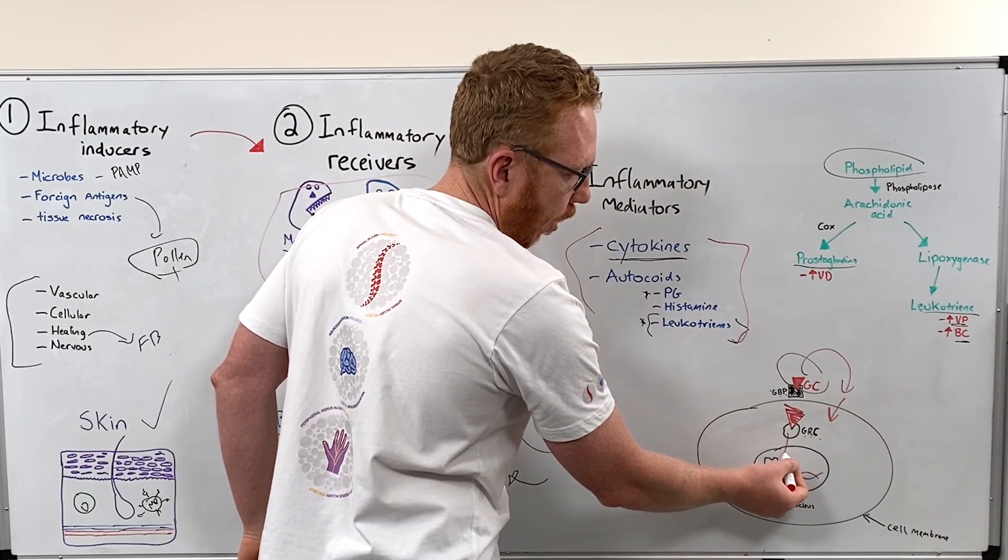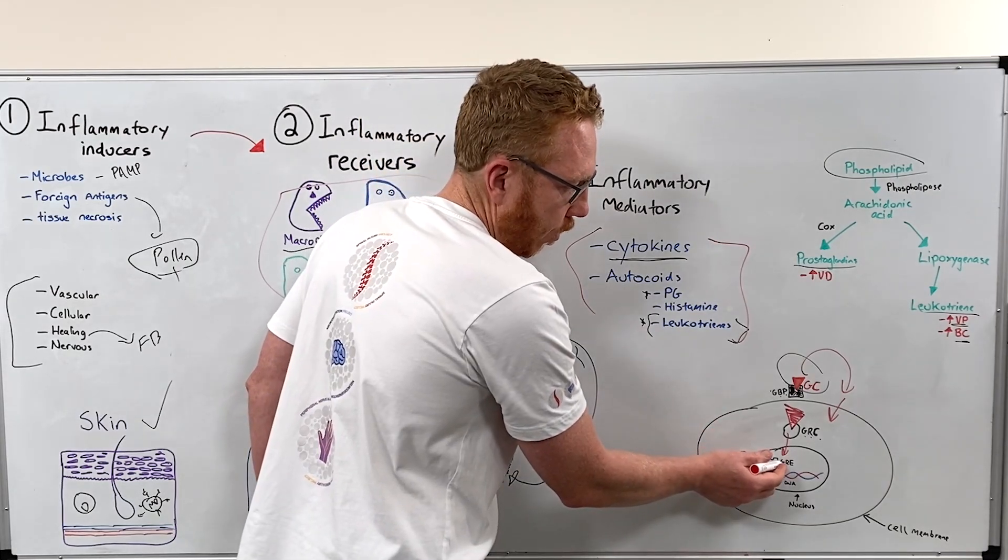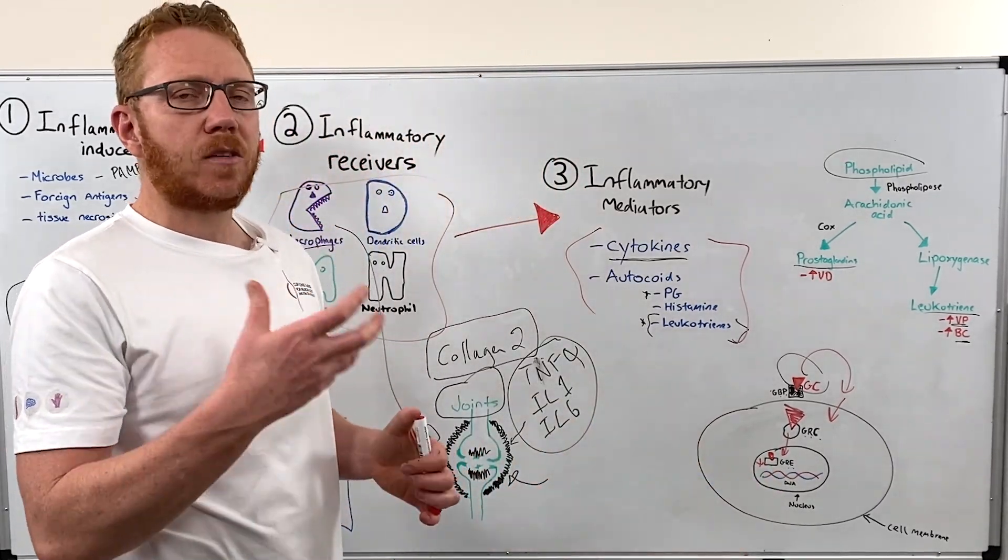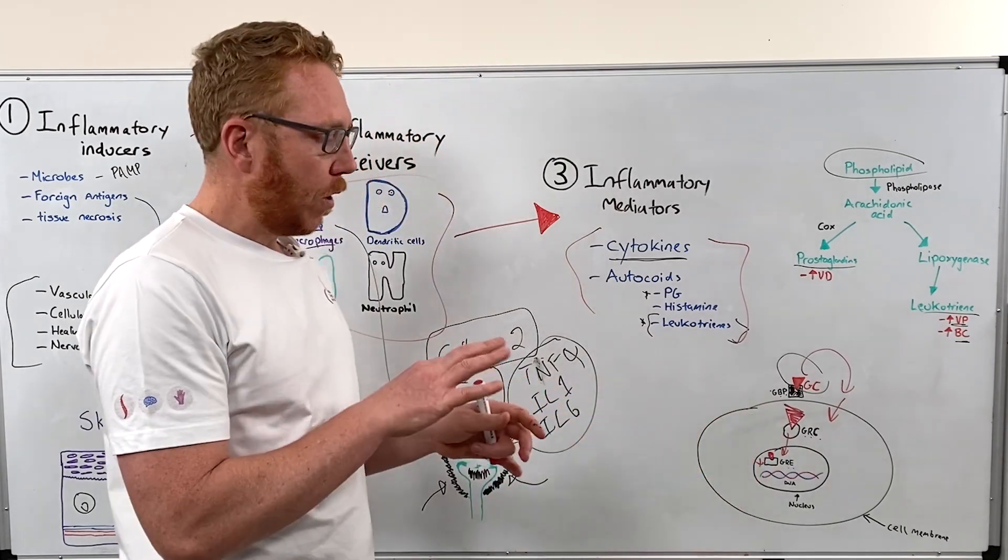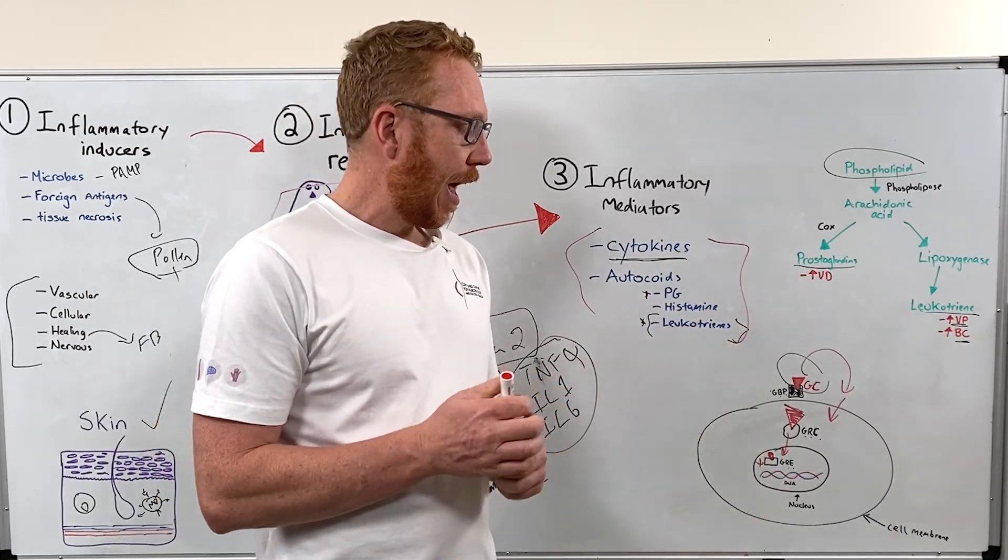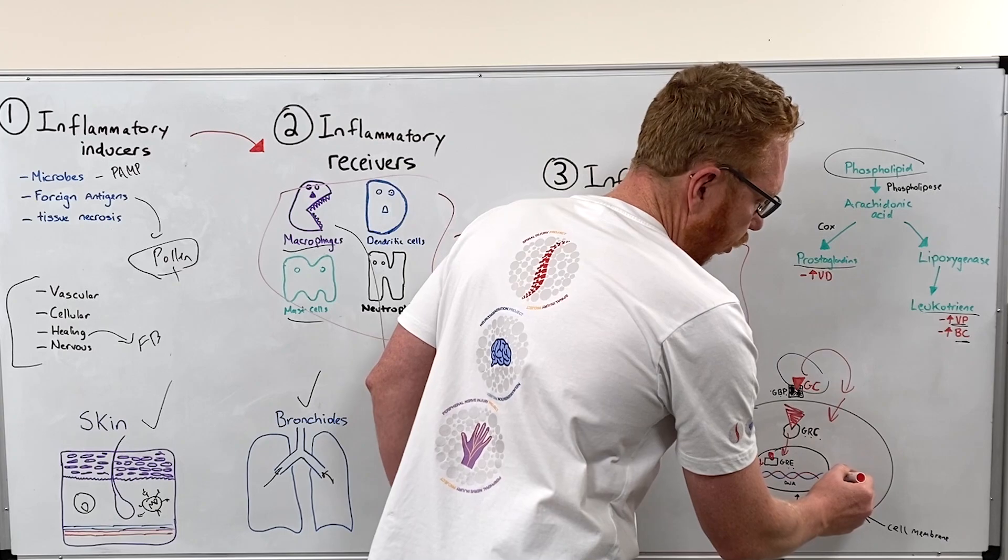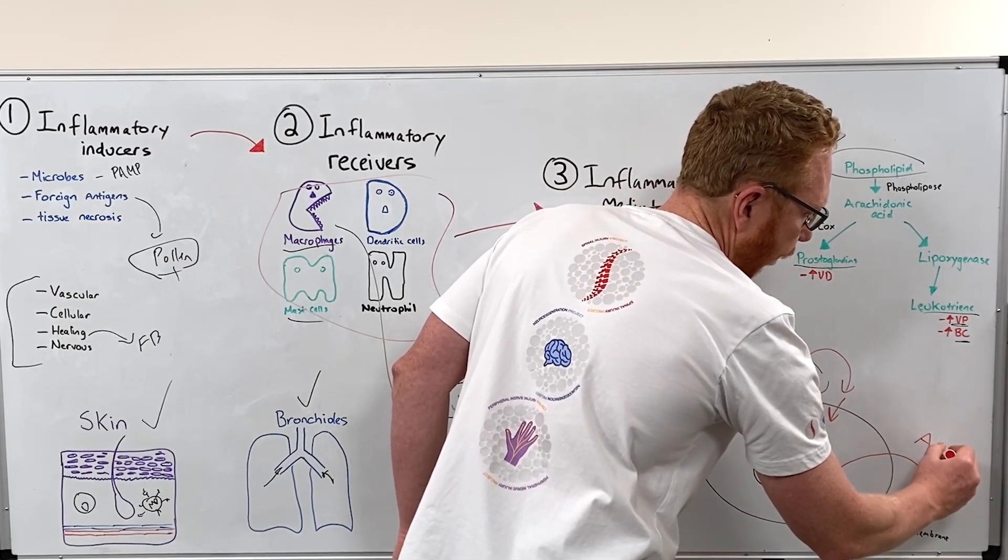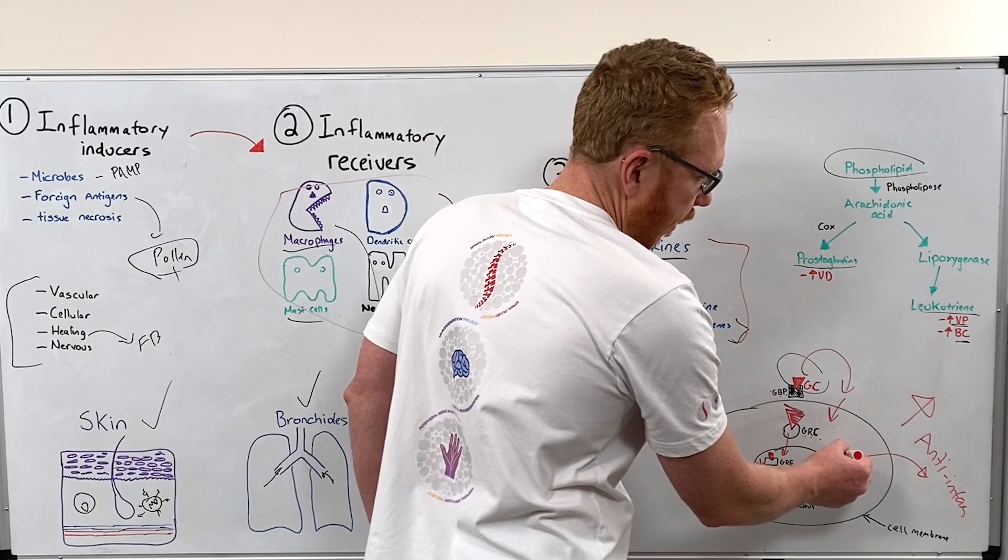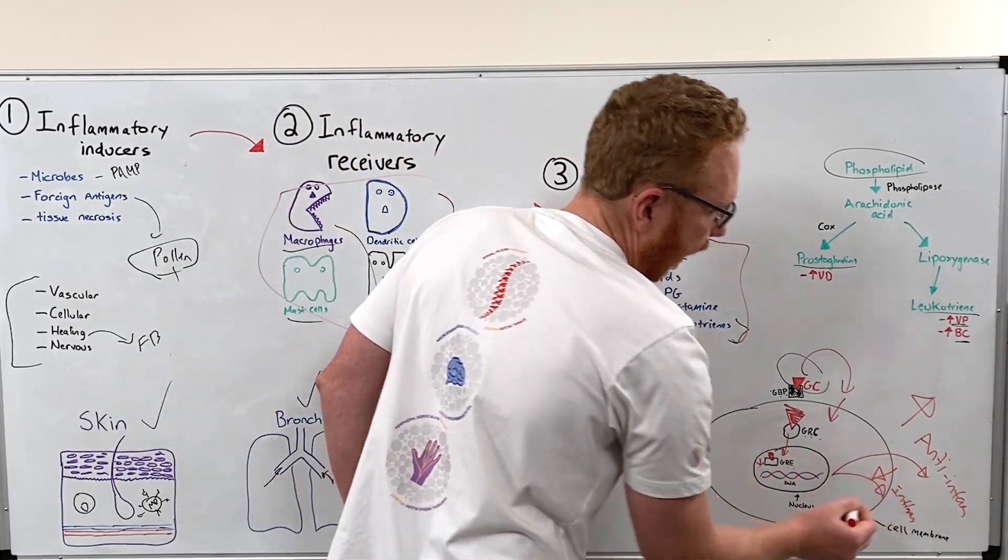This means the complex can enter the nucleus. Once it enters the nucleus, it will bind to another receptor called a glucocorticoid response element, which is now activated. It can work as a transcription factor on DNA. What it will do with the DNA is look at certain genes that have something to do with inflammation. The genes that normally make anti-inflammatory responses, it will make more of. And the genes that make inflammation, such as these cytokines, it will down-regulate.